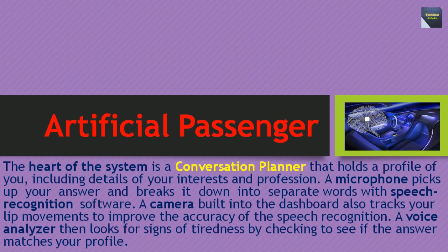A voice analyzer then looks for signs of tiredness by checking to see if the answer matches your profile. The artificial passenger is a telematic device developed by IBM that interacts verbally with a driver to reduce the likelihood of them falling asleep at the controls of a vehicle. Telematic machine works by capturing vehicle location data via a GPS-enabled device installed in a vehicle.